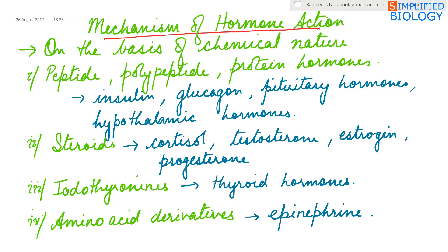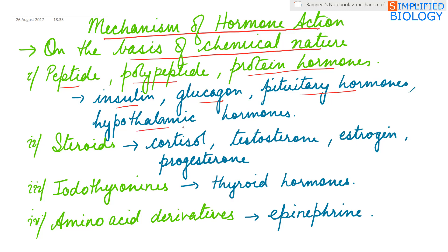Hormones can be divided into different categories on the basis of their chemical nature. First, the peptide, polypeptide and protein hormones like insulin, glucagon, pituitary hormones and hypothalamic hormones. Second, the steroids which include cortisol, testosterone, estrogen and progesterone.